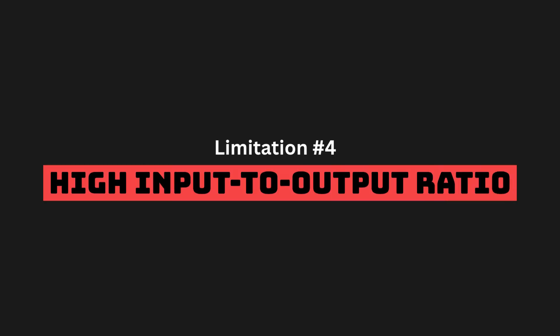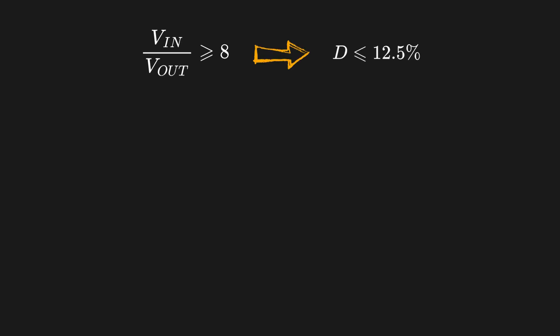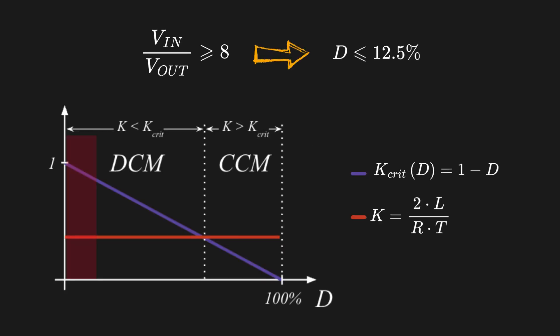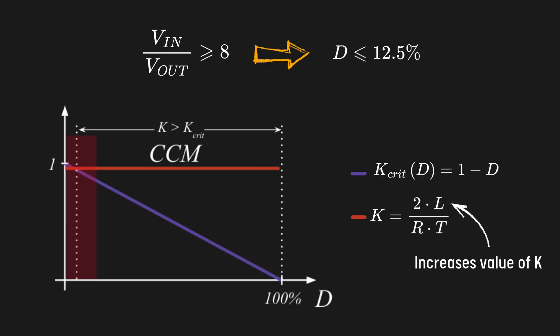But one of the most well-known issues with buck converters is dealing with high step-down ratios. When ratios get too high, buck converters tend to enter DCM mode, unless the inductor has a high value. In this case, they either lose efficiency or get bulky.